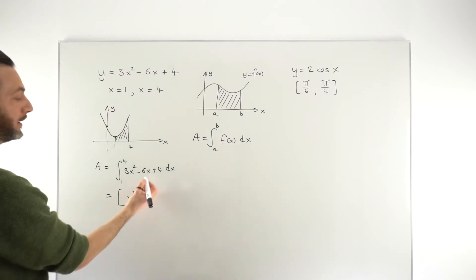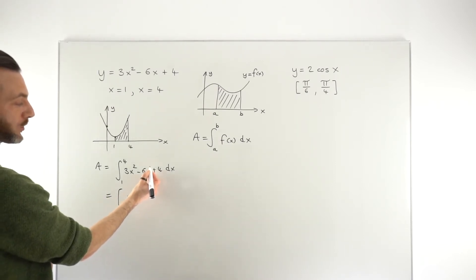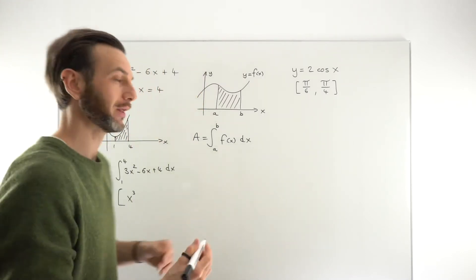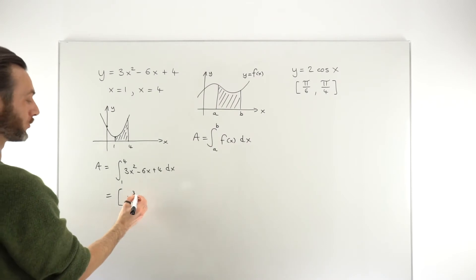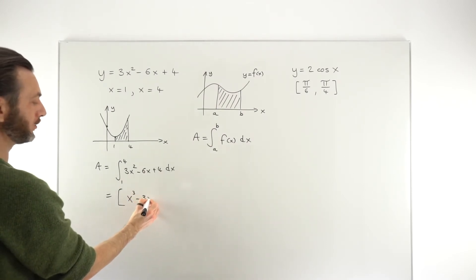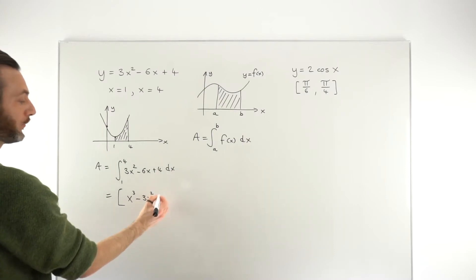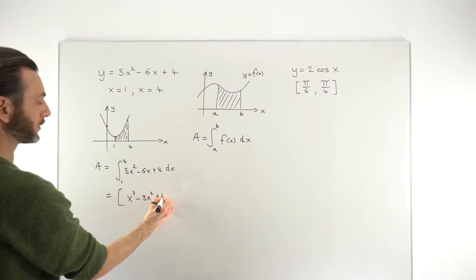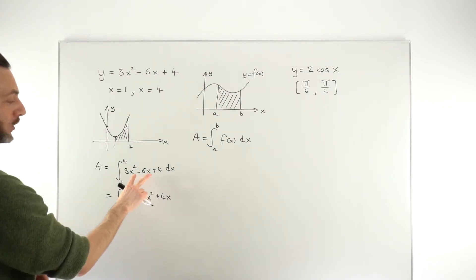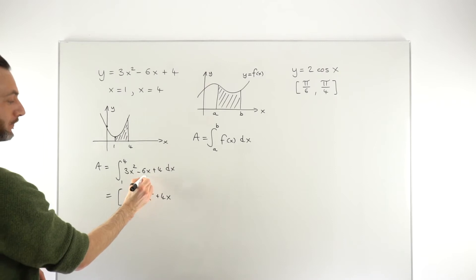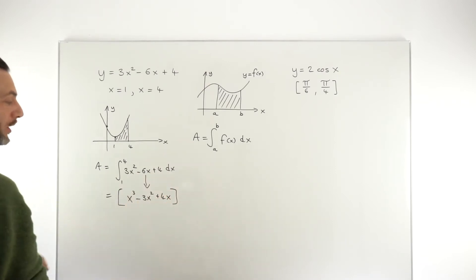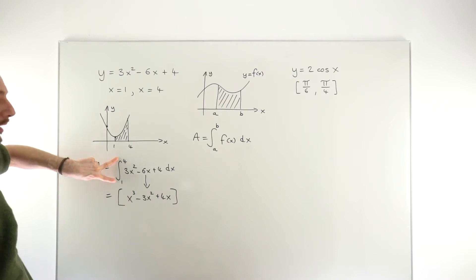The same here — the x term, which is x to the 1, goes up to x squared, divided by 2. 6 divided by 2 is 3, so it's going to be minus 3x squared. The 4, a constant, just integrates to 4x. So with definite integrals, we get from here to here using the power rule, but we put the answer in a square bracket and move the limits over to the right-hand side of the square bracket. That's just how we do definite integrals. So: integrate as normal, put in a square bracket, put the limits there.